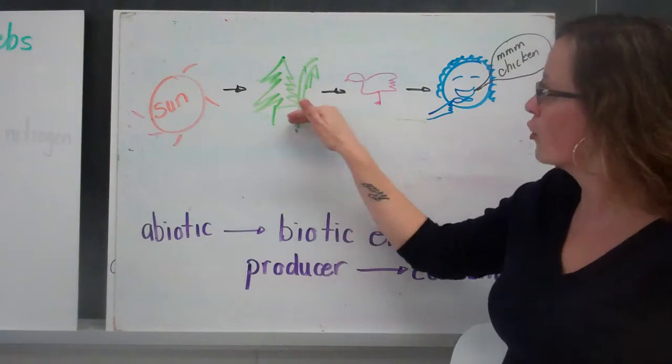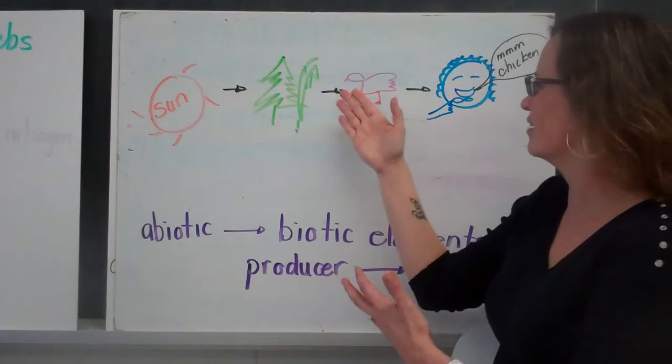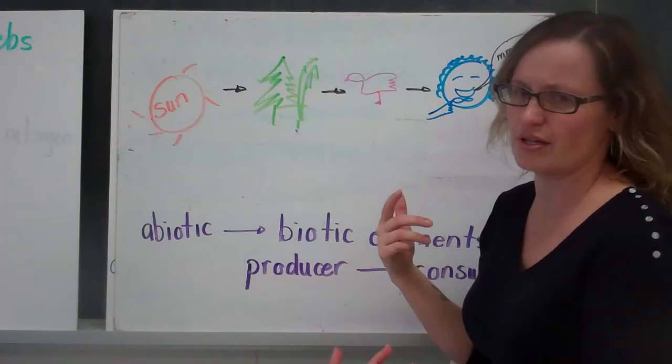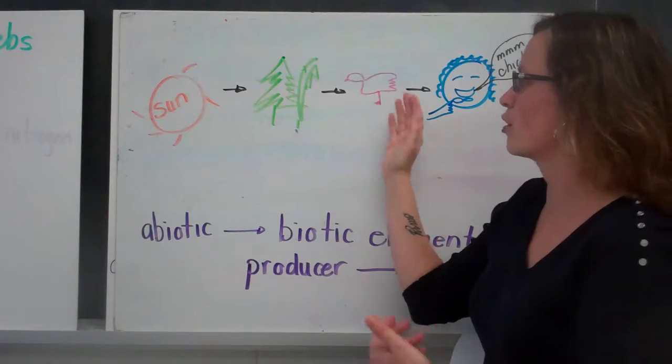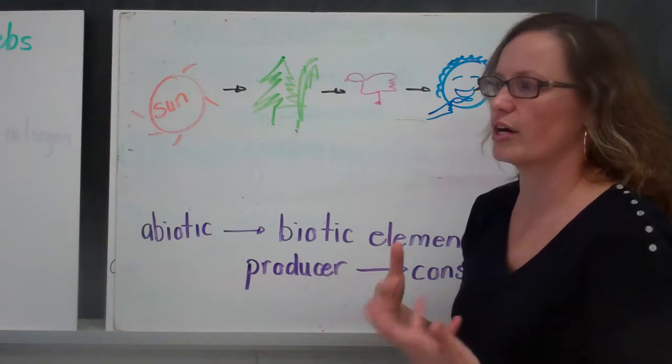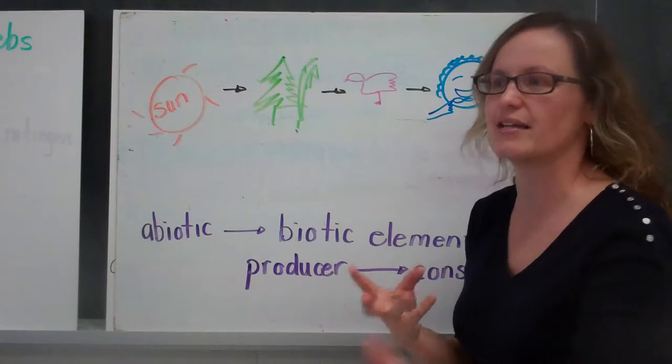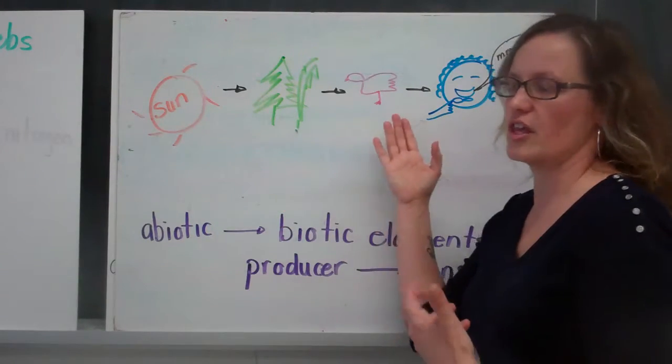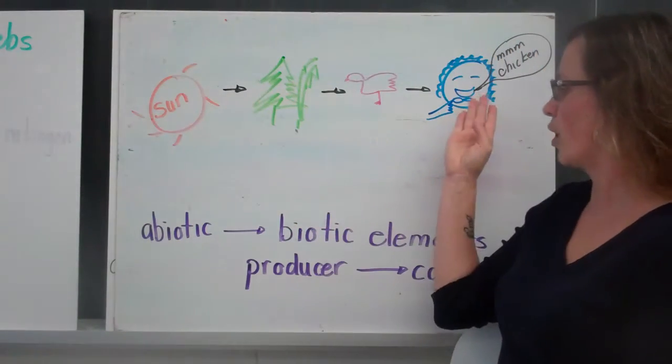So the energy flows in one direction. The chicken doesn't get energy from me when I'm eating it. I think the reason is obvious. But maybe more so for organisms that are consuming plants, the plants don't receive energy flow from the thing that's eating it. The energy flow goes in one direction.